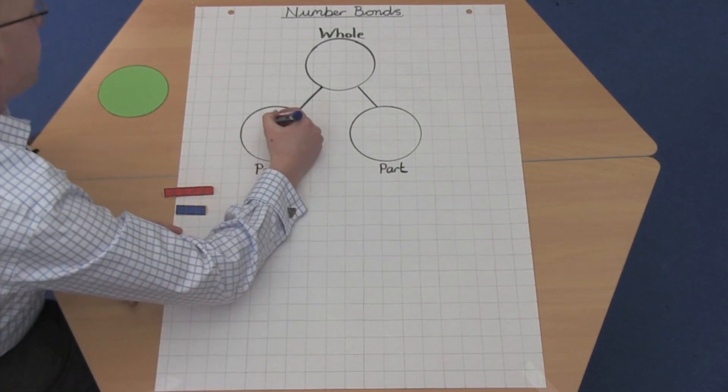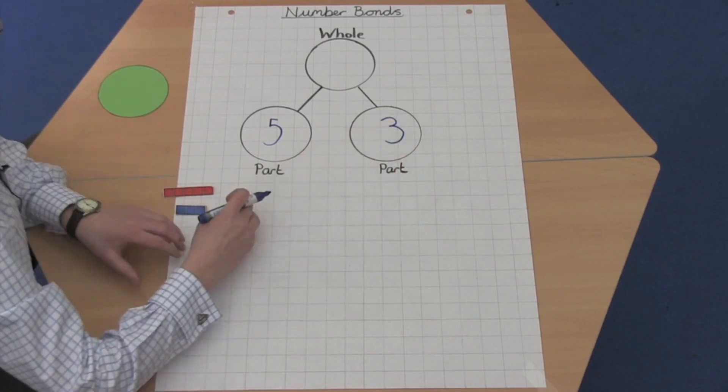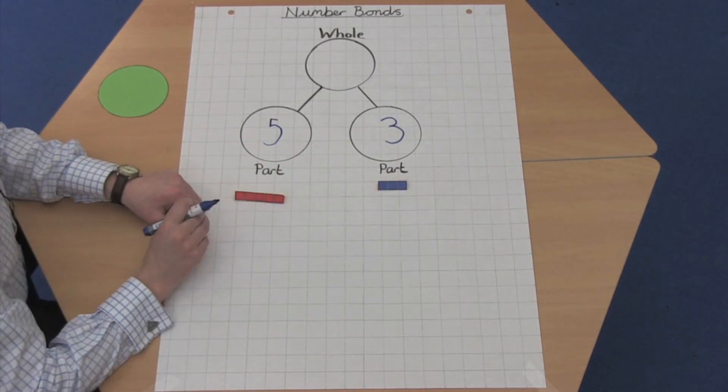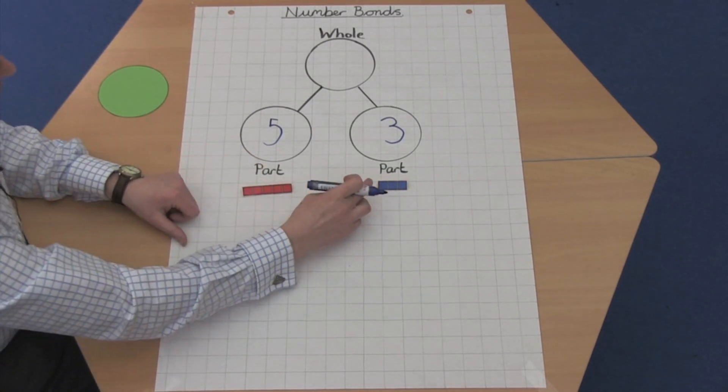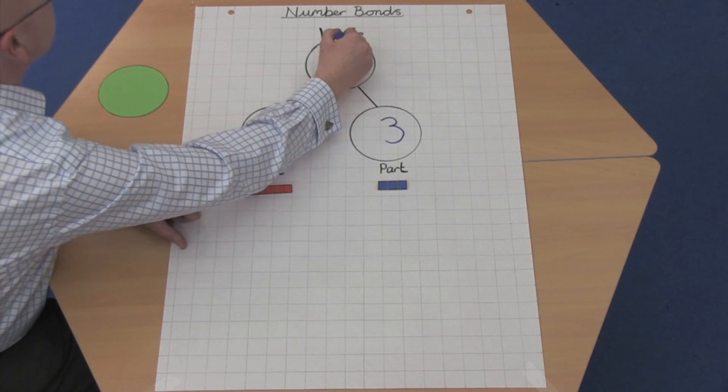So let's look at the relationship between five and three. We can put these two numbers together, five and three, and we can just count five, six, seven, eight. We know that the whole when put together equals eight.